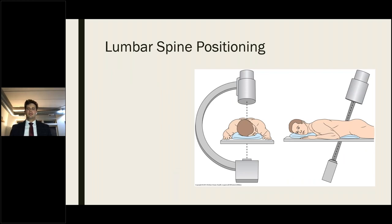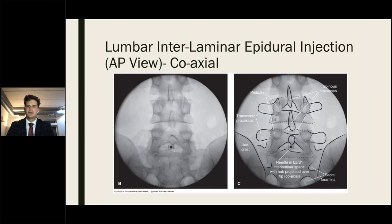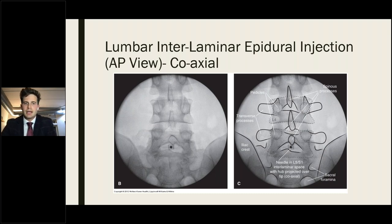C-arm angulation in the lumbar spine also depends on the specific level being treated. To minimize lumbar lordosis, place pillows or a blanket bump under the patient's lower abdomen. For a lumbar interlaminar epidural steroid injection in AP view, the vertebral body end plates should be squared off with spinous processes well-aligned midline. The interlaminar openings, pedicles, sacral foramina, and Tuohy needle entering in coaxial fashion through the interlaminar space are all visible in this orientation.